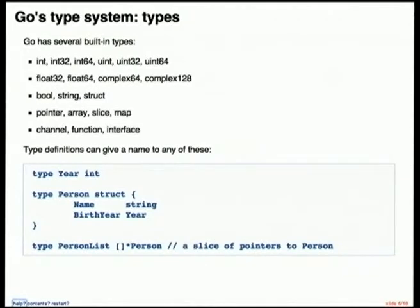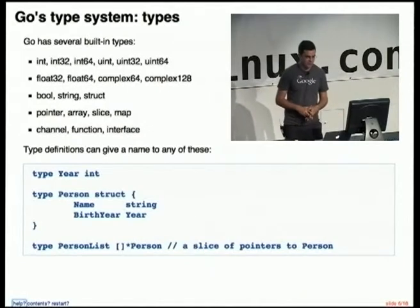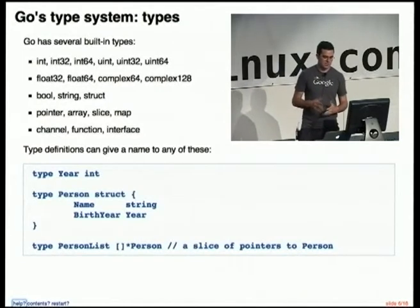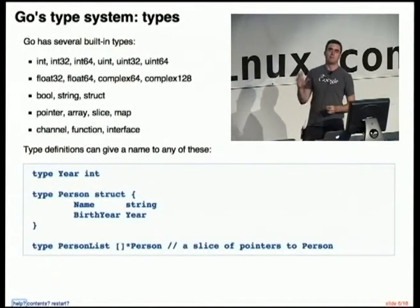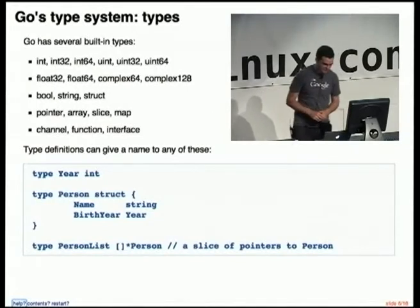So what does it have? Go's type system is based around several built-in types: the numeric types — integers and floats, complex numbers of various precisions — booleans, strings, struct types which are just concatenations of various other types, pointers, arrays and slices, and maps which is a built-in hash map type. And finally we have channels, which is one of our concurrency primitives for communicating between threads. Functions and interfaces are also types, which I'll go into in a little bit.